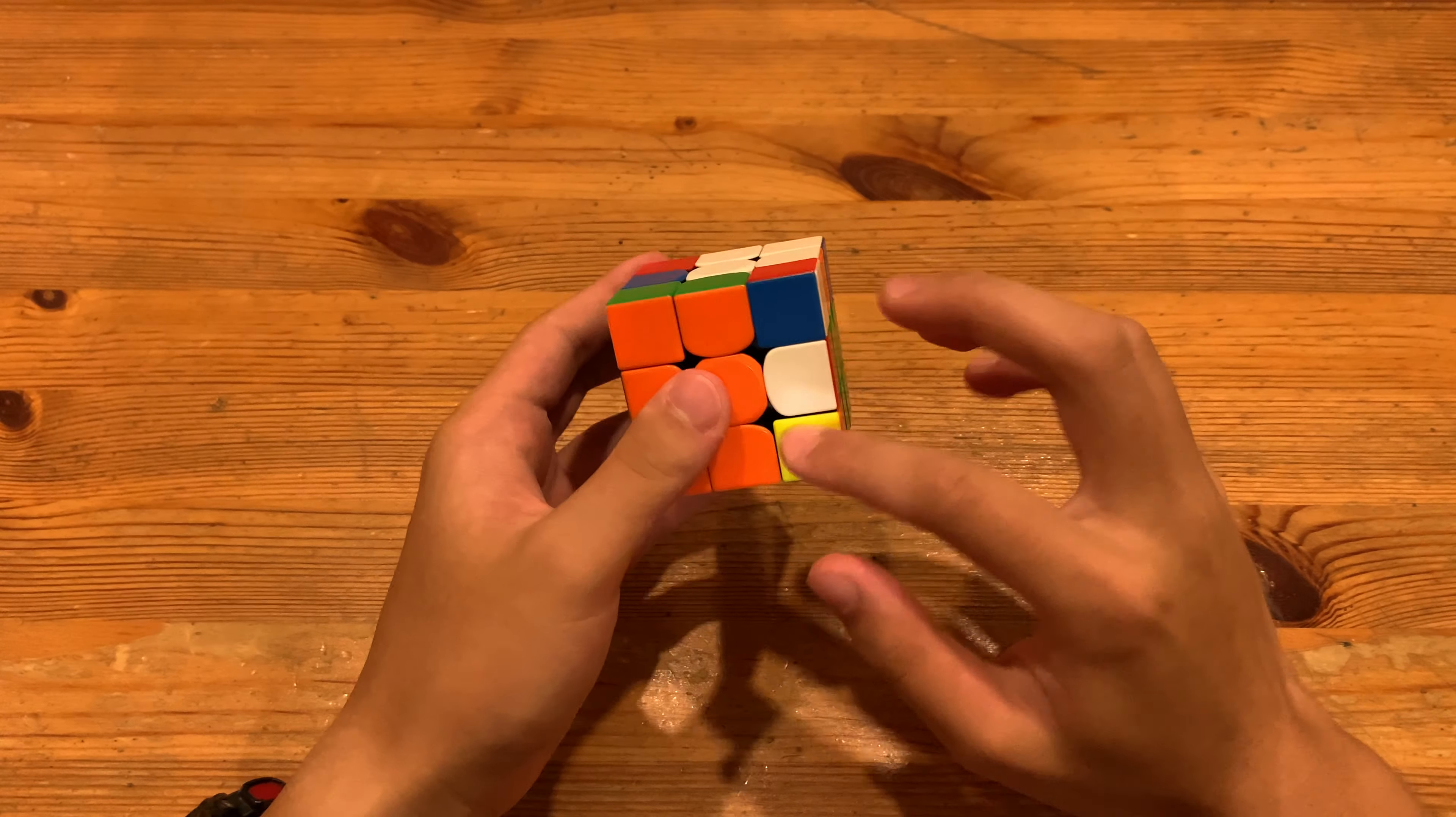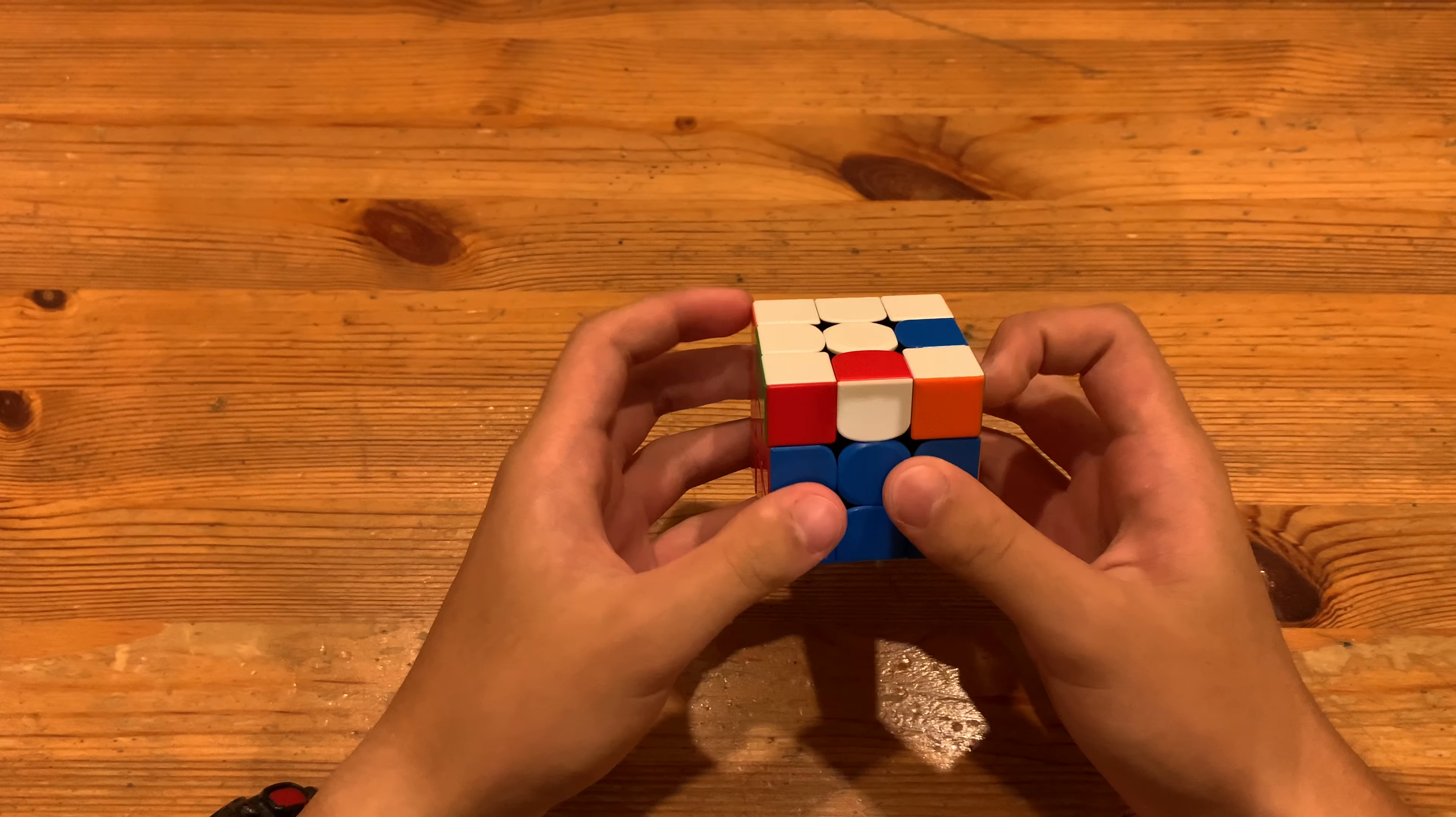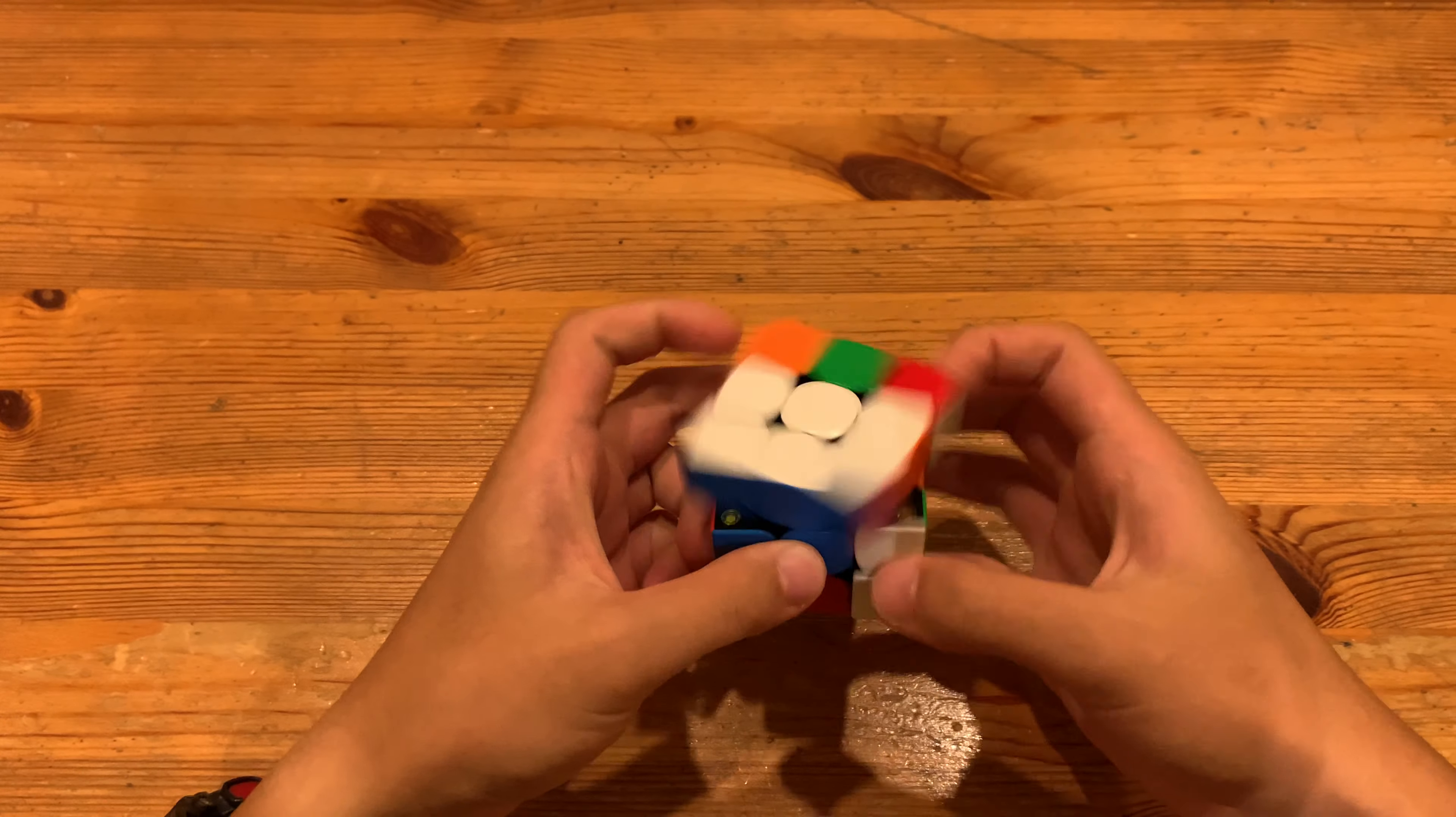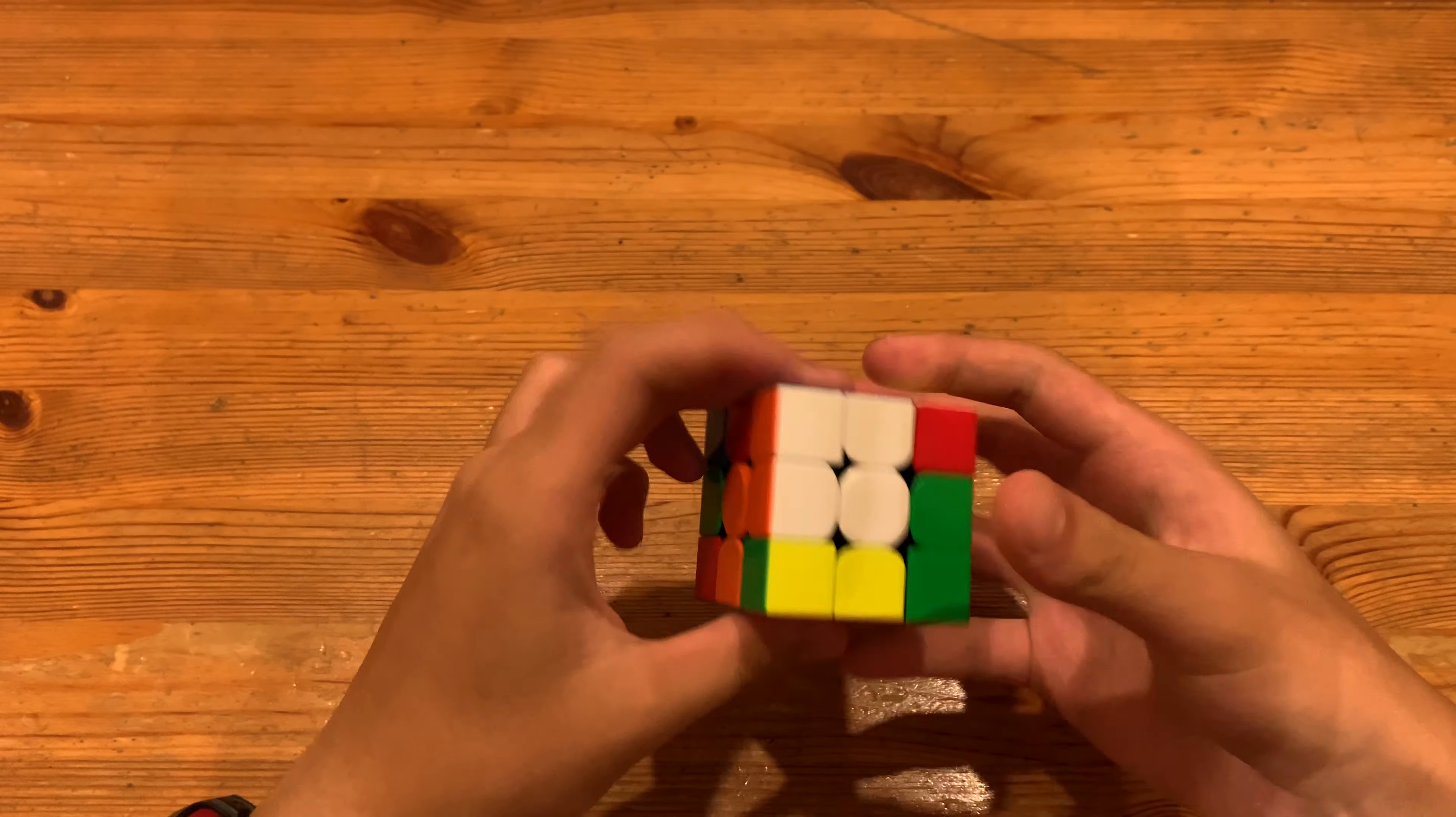Next, this pair, he rotated and he had this OLL. He did the standard algorithm and a G perm. And he didn't have a single pause because you can one-look last layer with that OLL pretty easily.